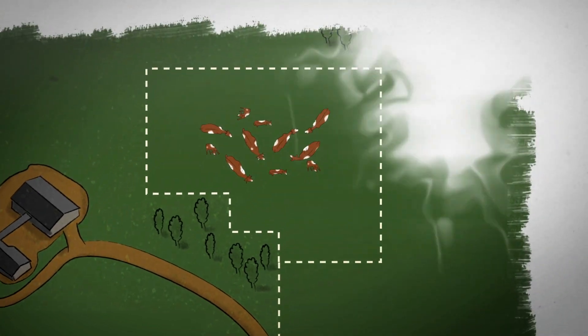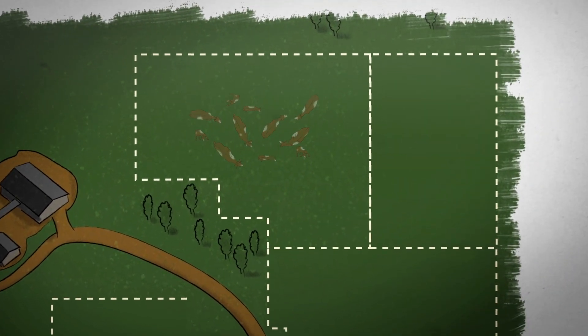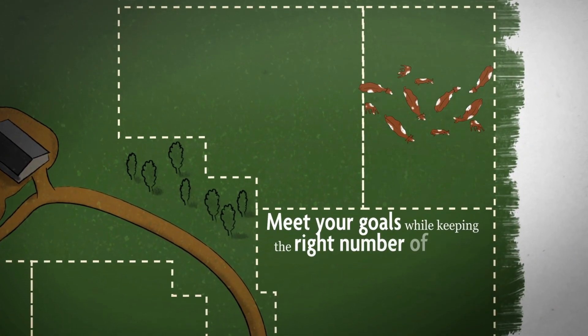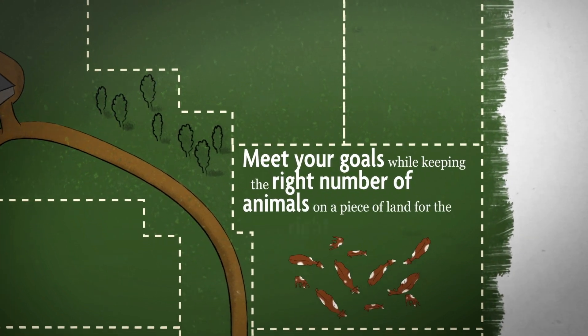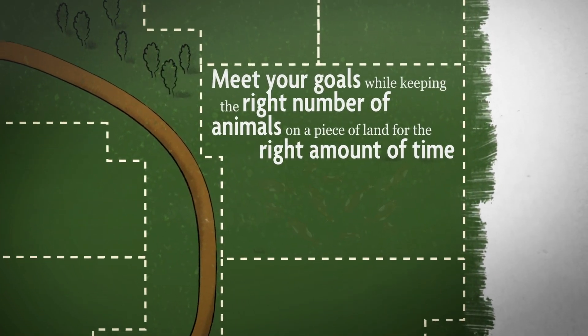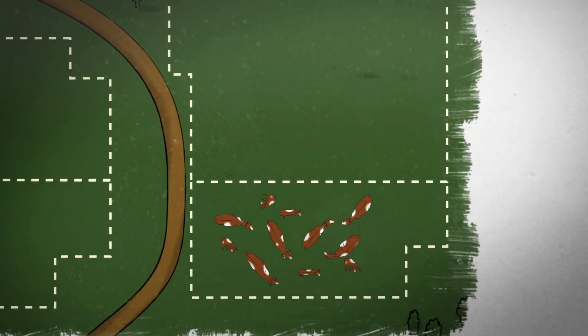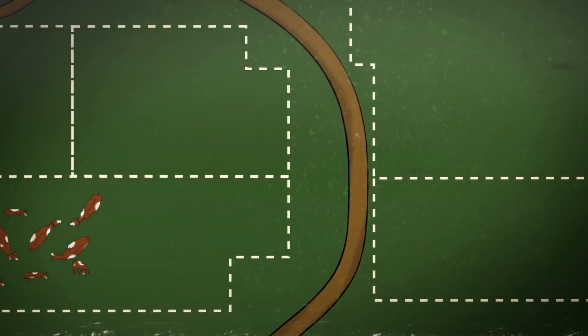Next, decide on a stocking rate and grazing schedule. You want to meet your goals while keeping the right number of animals on a piece of land for the right amount of time. Start with a very conservative stocking rate and work your way up to an optimum rate as you learn what your land can support.